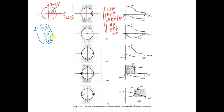For the first case, the transfer function H(z) equals 1/(z - 0.9∠45°). There are no zeros and no notional gain given.